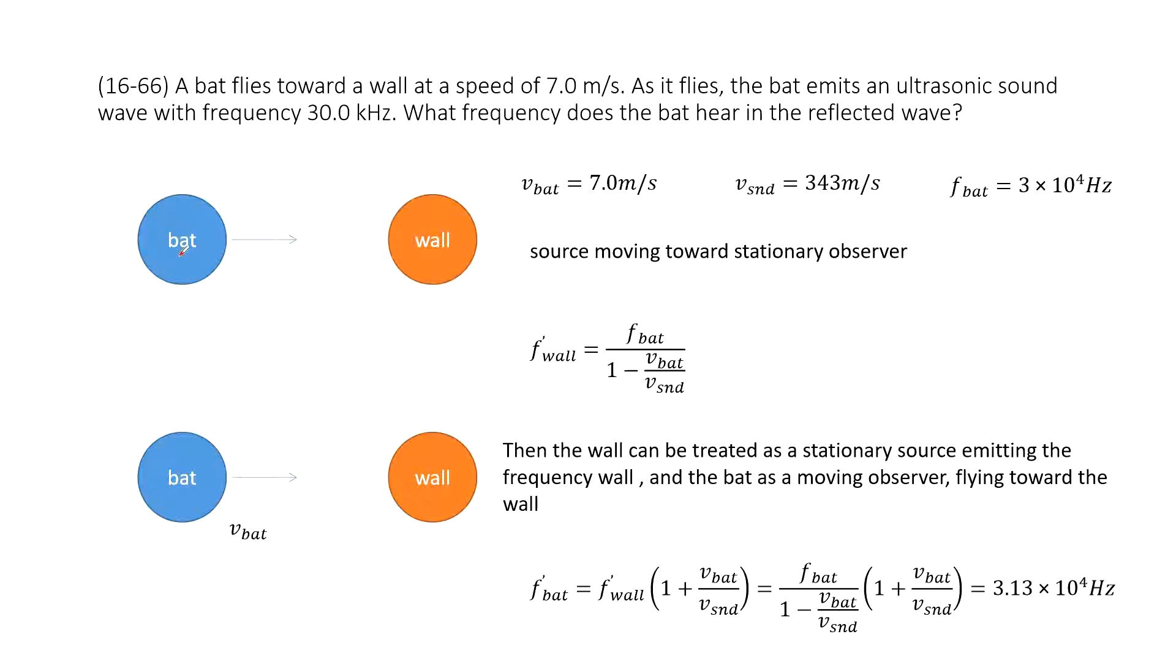You can see we have the bat. This is the wall. And initially, we know the bat, this source, is moving at the speed 7 meter per second towards the wall.